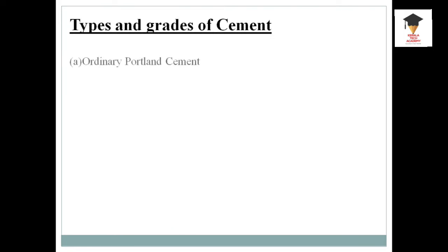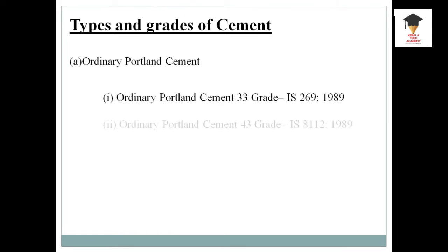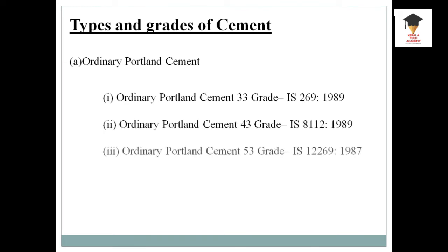The first type is Ordinary Portland Cement. Ordinary Portland Cement is classified by grade. The first one is Ordinary Portland Cement 33rd grade. It is as per IS 269:1989.